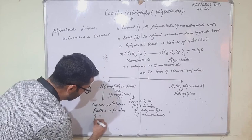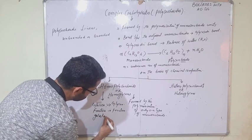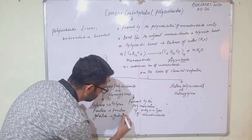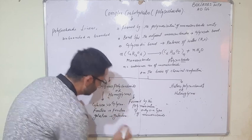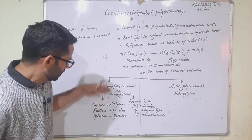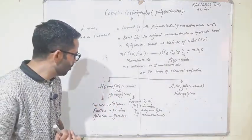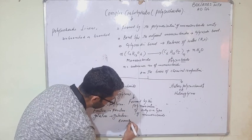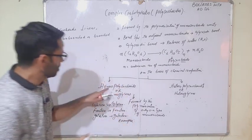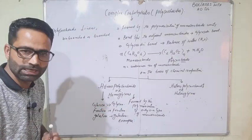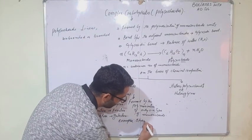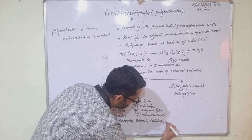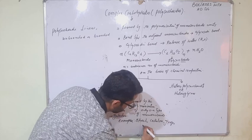If the homopolysaccharide is made up of galactose, then we call it galactan, and so on. Examples of homopolysaccharides or homoglycans are starch, cellulose, glycogen, etc.